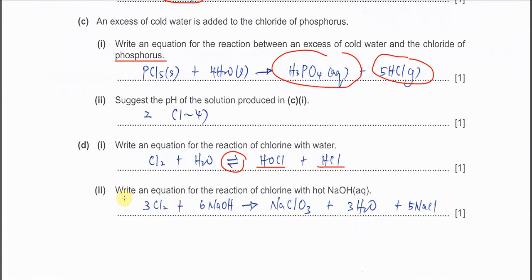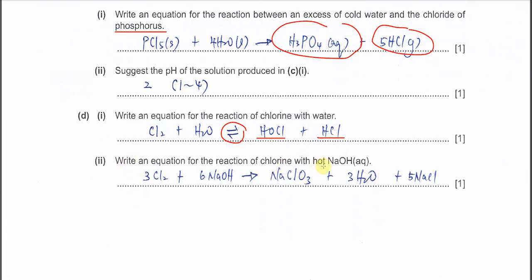Part D2: write an equation for the reaction of chlorine with hot NaOH. This is quite common nowadays, so you should know it will form sodium chlorate(V), where the oxidation number for chlorine is +5, so it's sodium chlorate(V).